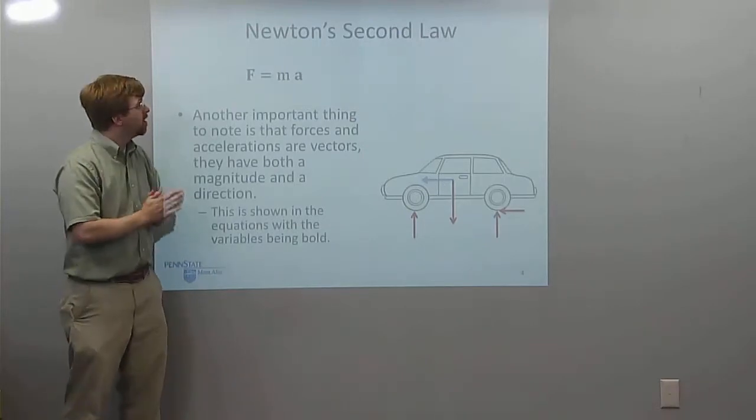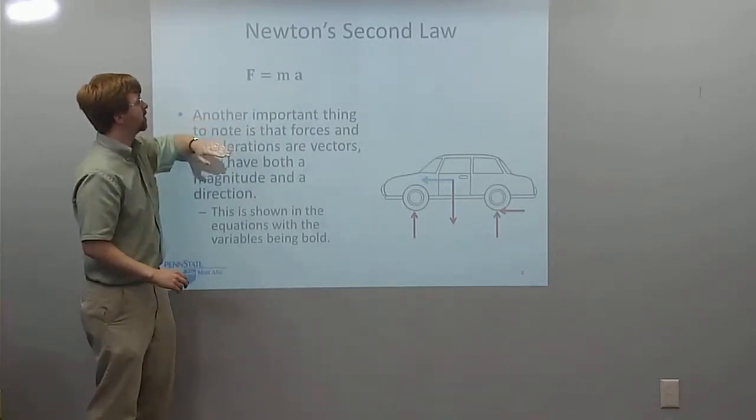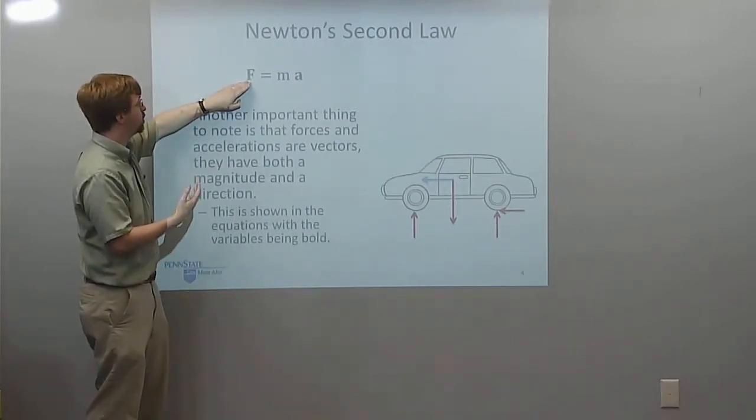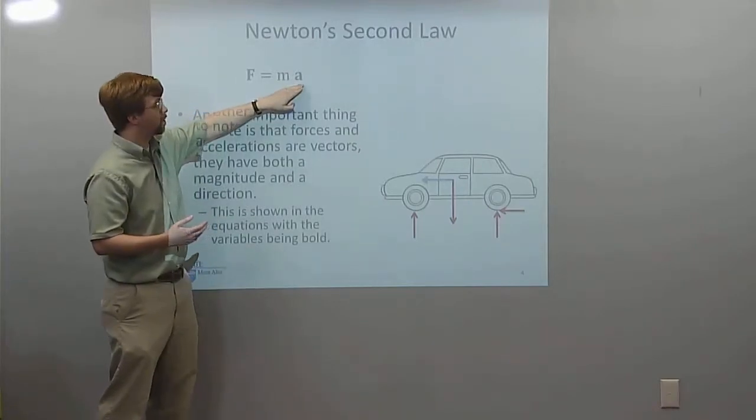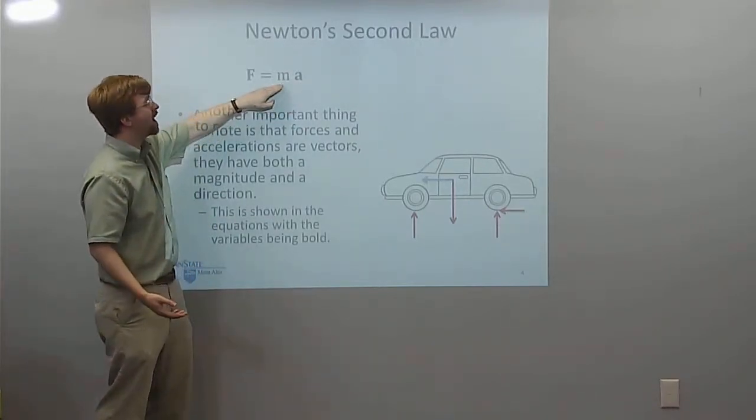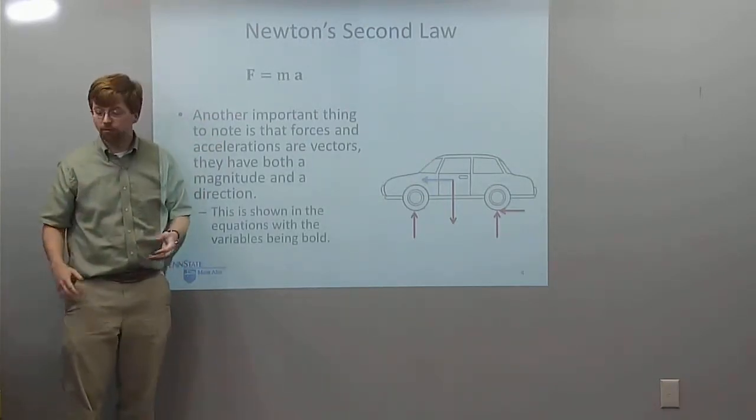And we can tell that these are vector quantities in our equation because I've bolded these values. So force is bold, it's got a magnitude and direction. Acceleration is bold, it's got both a magnitude and a direction. And mass is actually a scalar quantity. It has a magnitude but no direction to it.